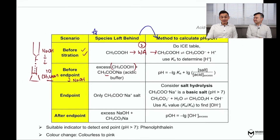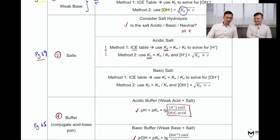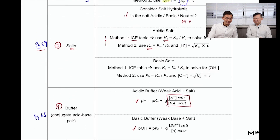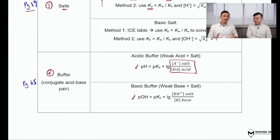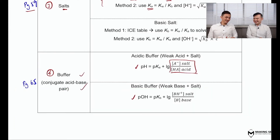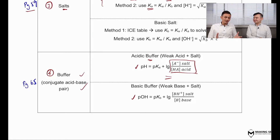Well, it sounds like it might work, but let's return to the situation. I have a weak acid and a salt present at the same time — it looks like two different scenarios. But it's important to realize there is another scenario: a buffer, because I have a conjugate acid-base pair present. So the correct way to solve for this situation is to use the buffer formula. Knowing this is an acidic buffer, we just apply the acidic buffer formula and solve for the answer. Students must master this table — know what the situations are and what methods to use.